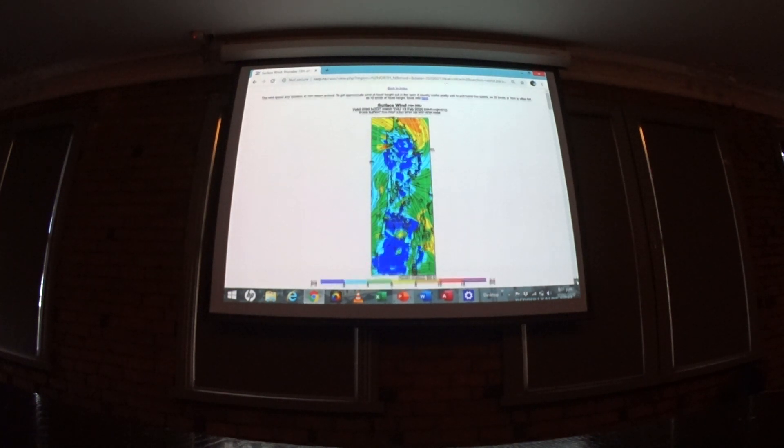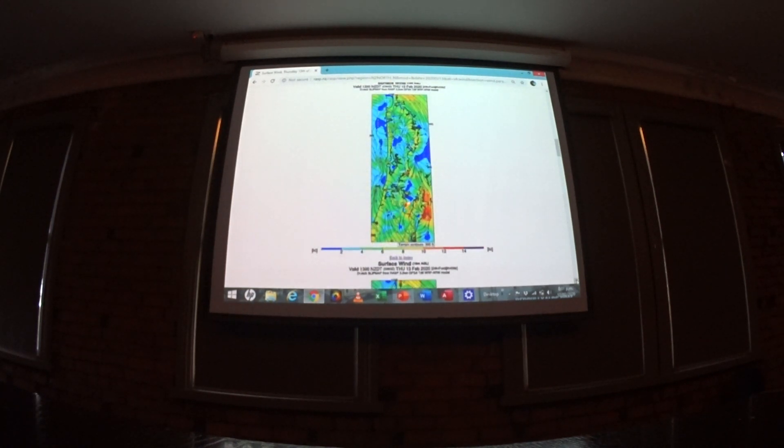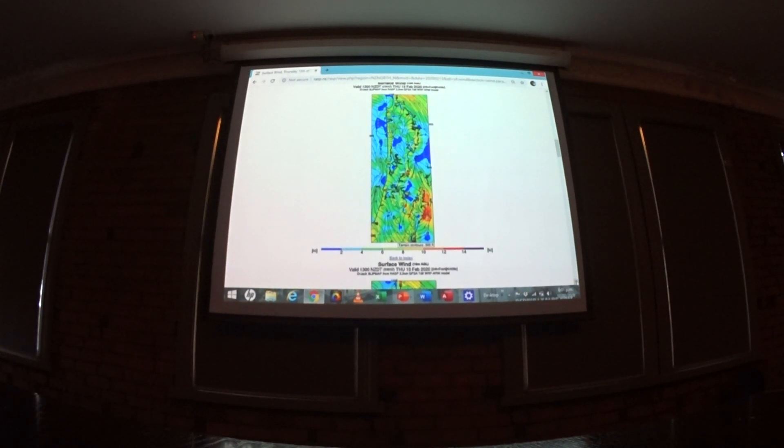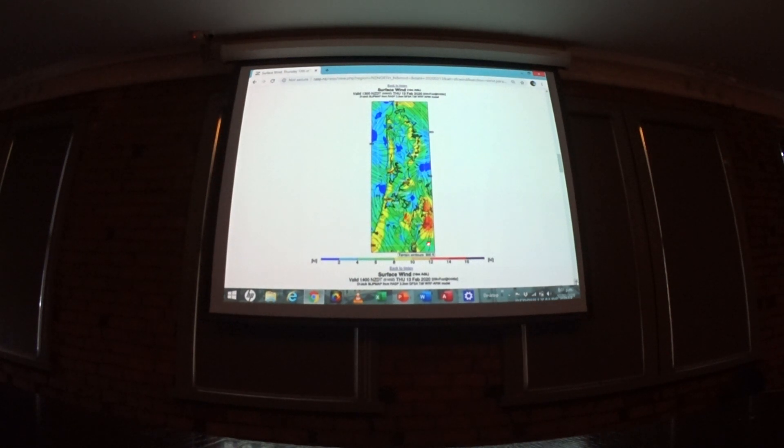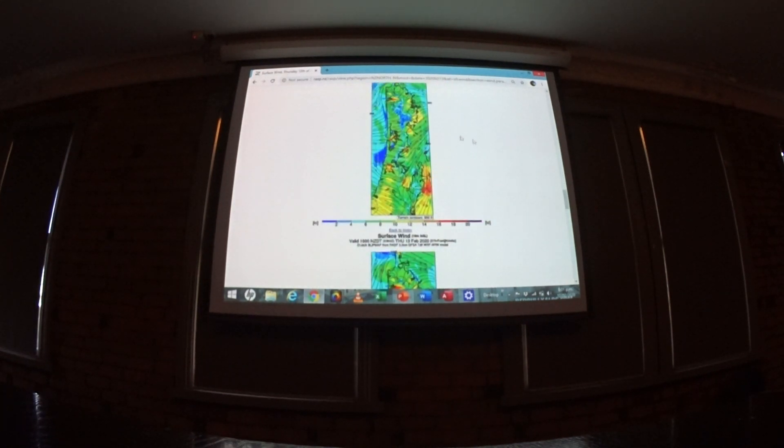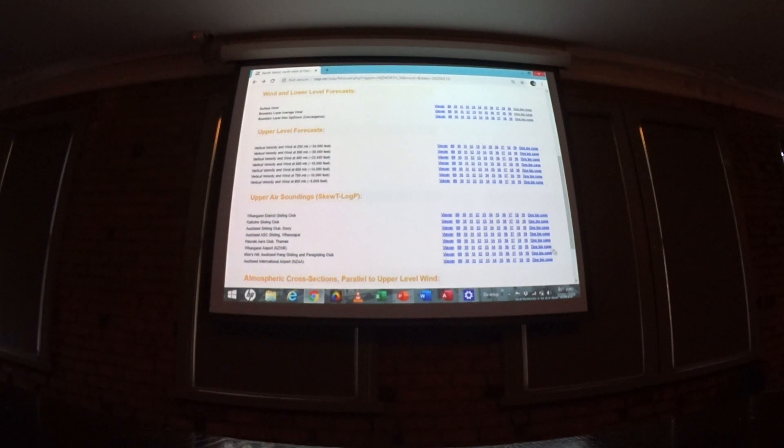This surface wind speed at launch - you can see the convergence lines there as well, kind of like the spine of the ridges.